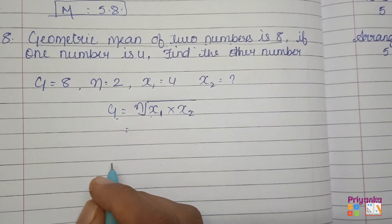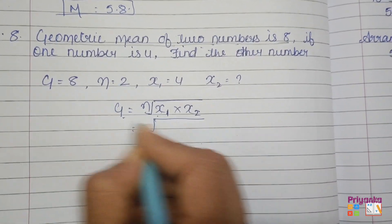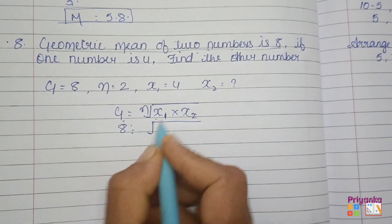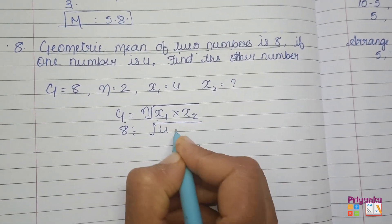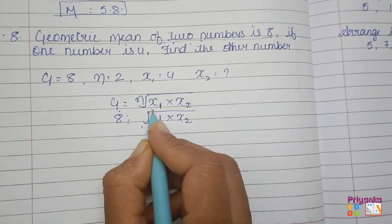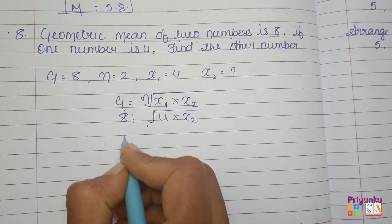So here we'll make a solution by keeping under root. The geometric mean which is already given in the question is 8. x1 is 4, and x2 has to be found out.